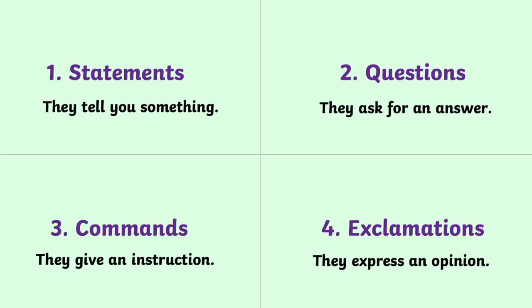Let's remind ourselves of the four types of sentences. Statements are normal sentences — they just tell us something. Questions ask for an answer and are easy to spot because they have a question mark at the end. Commands give an instruction, start with a verb, and have no one in particular doing that verb — they tell you what to do. And exclamations express an opinion; for year two, they always start with 'how' or 'what', and often end with an exclamation mark.